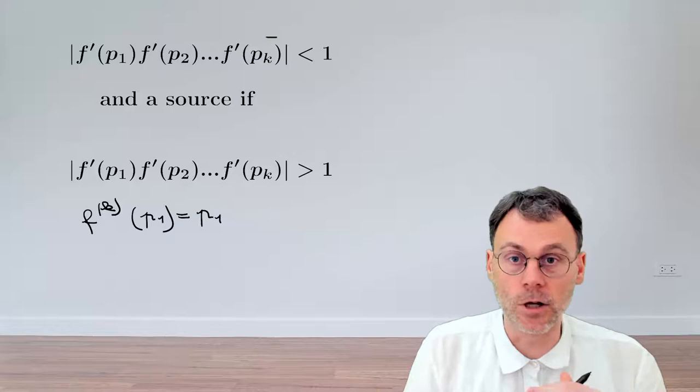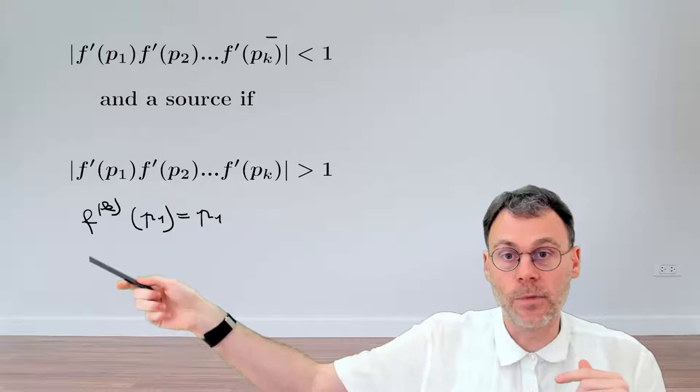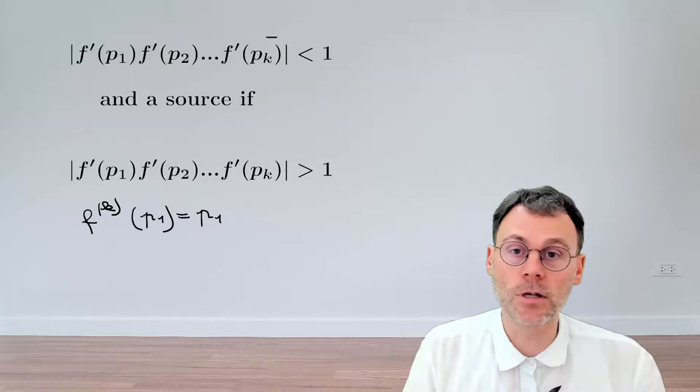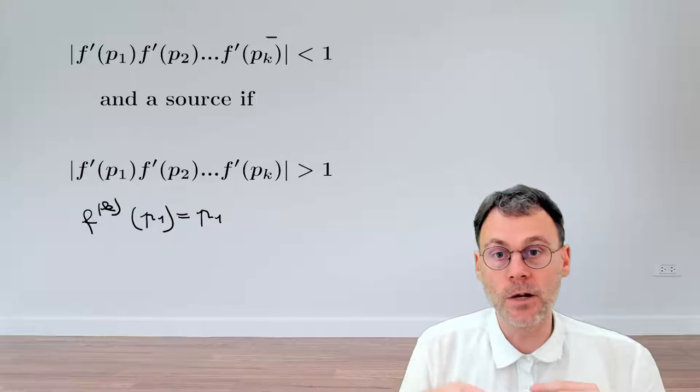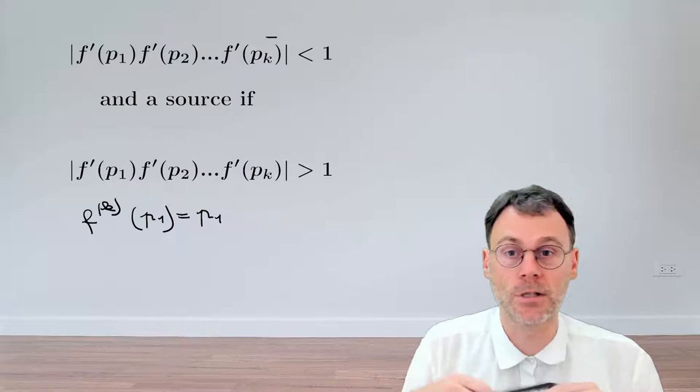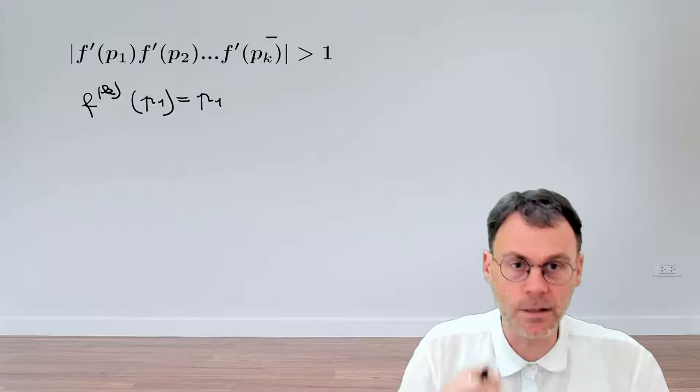So now we've recast that problem as a problem involving a fixed point of just a regular map. So we know how to tackle that. We need to look at the derivative of that map, in this case, this composite map, look at the magnitude and see if it's smaller than one or bigger than one. So the problem basically reduces to showing that the stuff you have here in between the absolute value sign, that that indeed corresponds to the value of the derivative of the map f applied k times at the point p1. So that's our goal.